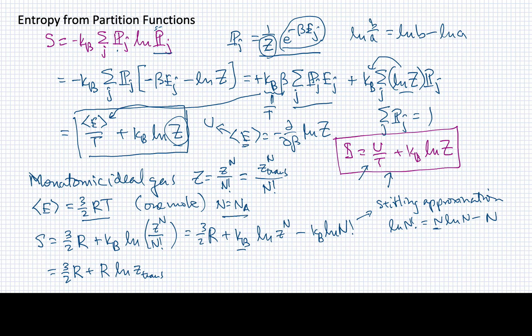This will be times log of the translational partition function for the atoms. I'm going to end up with factors of n that will multiply by KB, so I'll have a factor of R times log of n minus 1.